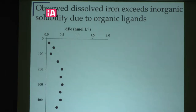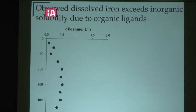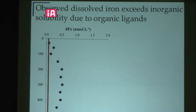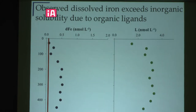Iron chemistry in seawater is a little bit complicated. It's generally very scarce because it doesn't have good solubility — inorganic forms of iron have very low solubility. If we look at this profile of dissolved iron, it's in nanomolar concentrations in seawater. If it were only inorganic forms, the profile would look more like the red line — much lower than what we actually observe. We observe higher concentrations because dissolved iron in seawater is generally complexed by organic molecules or organic ligands, and these ligands enhance the solubility of iron.